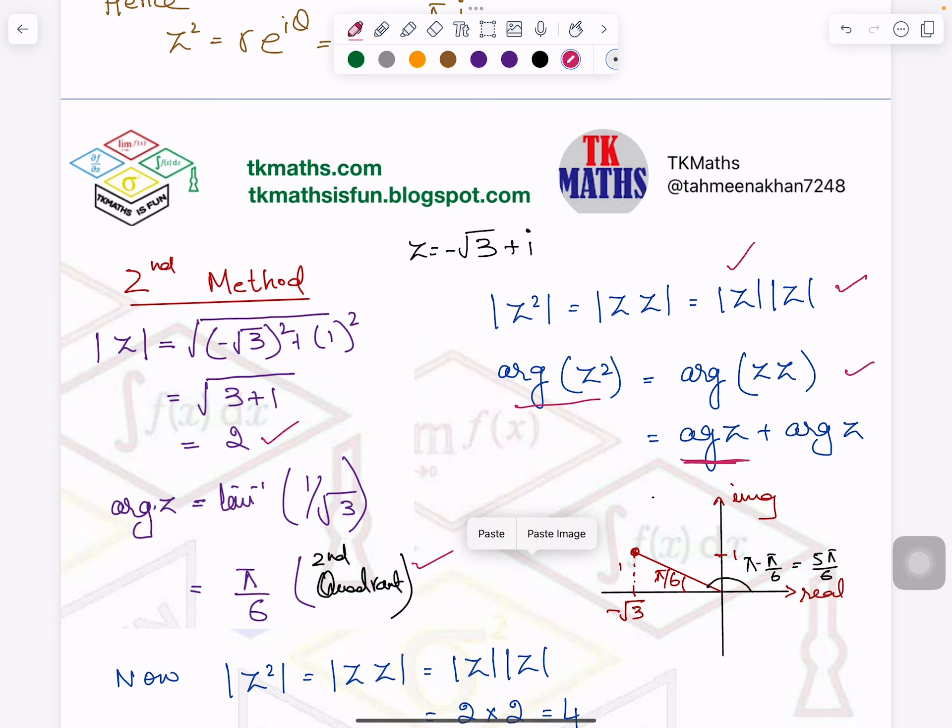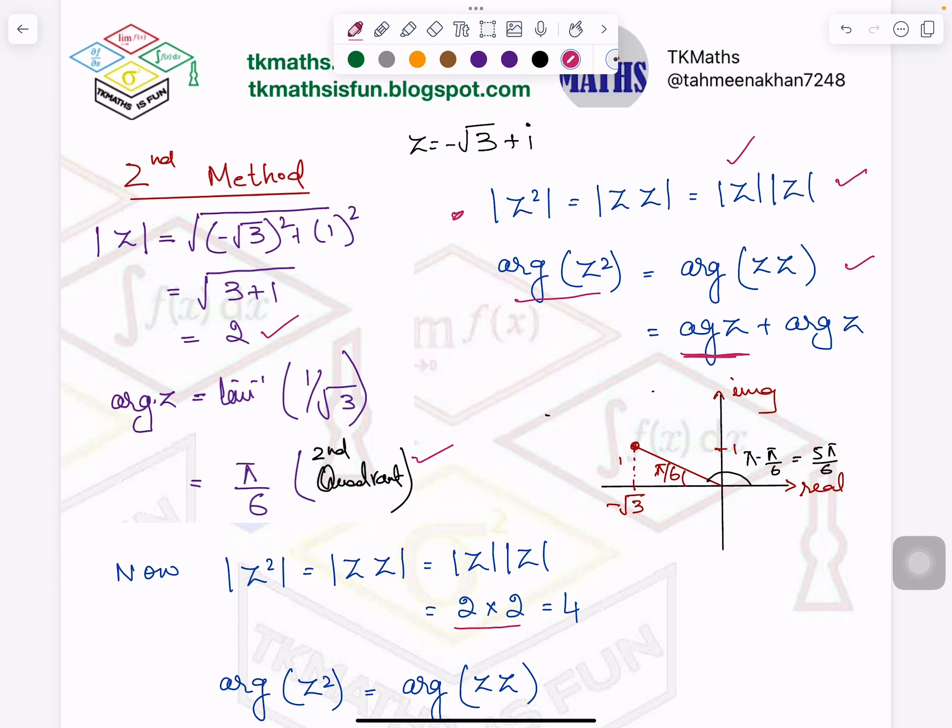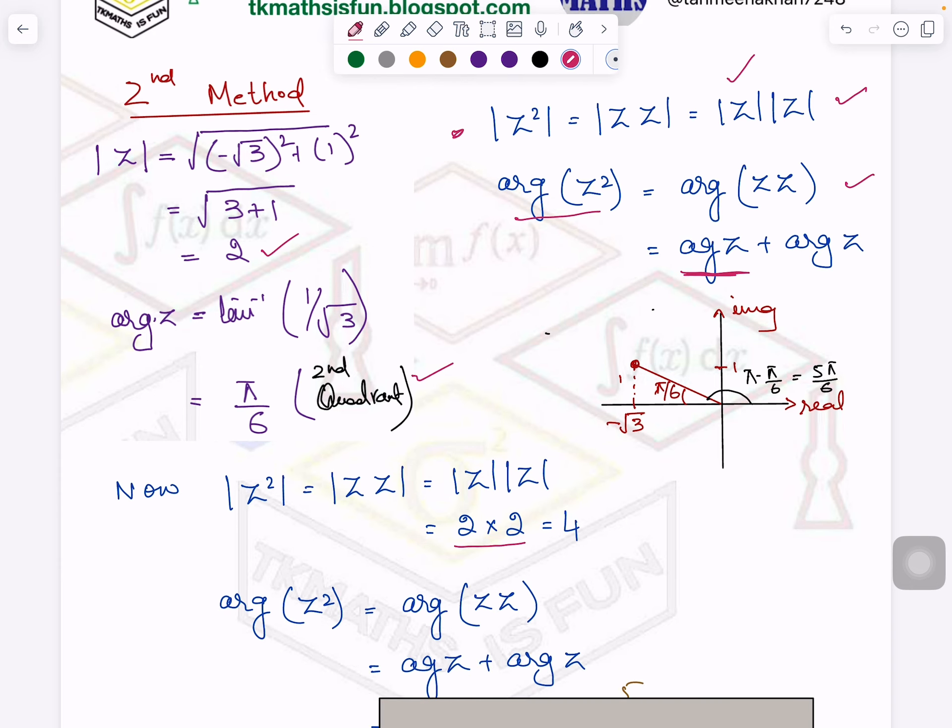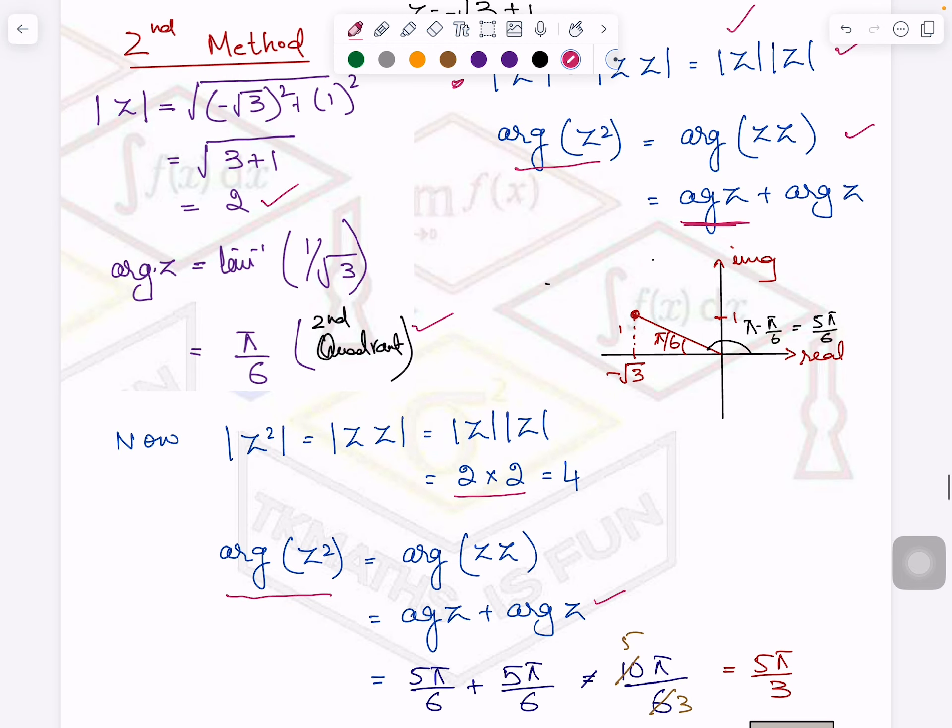So now using this concept, it is Z square. So I am multiplying 2 by 2 and it equals 4. Similarly, for the argument of Z square, I will simply add π/6 and π/6. By the way, there is something very important.